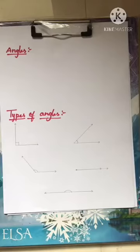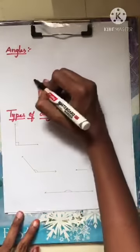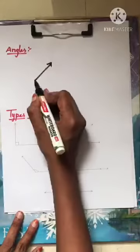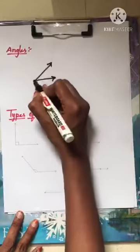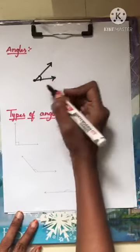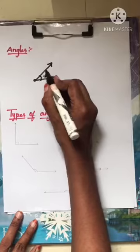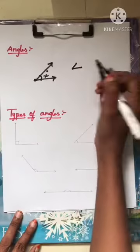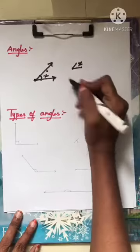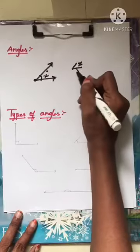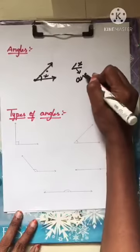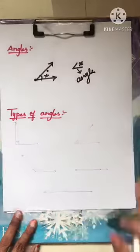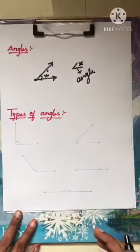Here we are going to learn the types of angles, but before that we will recollect what an angle is. An angle means 2 rays joined at a point. An angle is measured in degrees, and the symbol of angle is written like angle X.